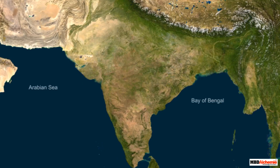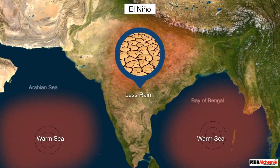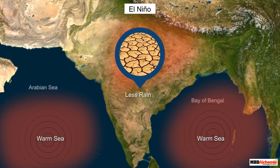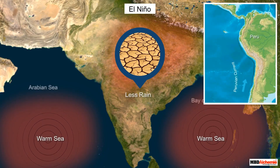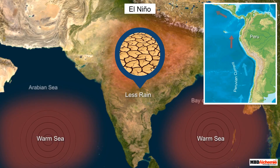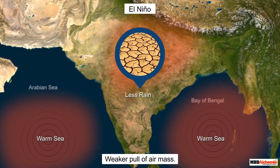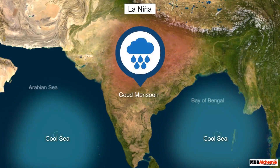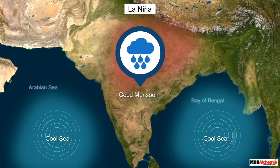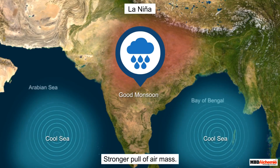During El Niño, the monsoon will be weaker and come late in India, as summer is cooler and the surrounding sea and ocean temperature remains warmer than usual. The Peruvian cold current is replaced by a warm current, so the pull of air from the landmass would be weak. La Niña is good for monsoon conditions, as the temperature over the sea remains cooler and the pressure difference between land and sea is very high, making the pulling of air mass from sea to land very intense.